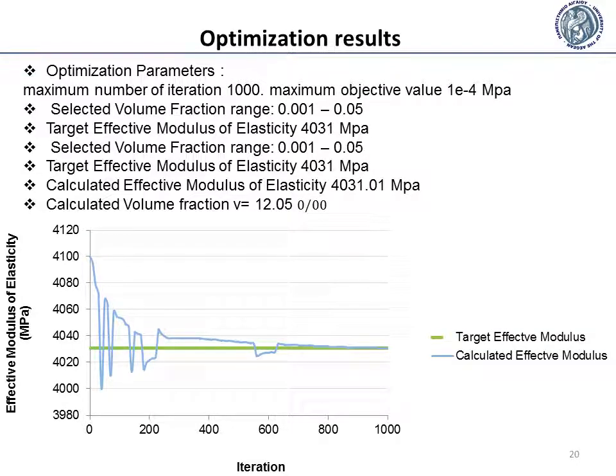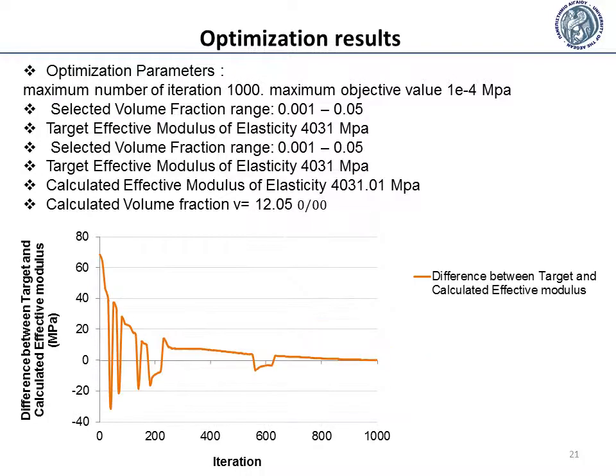This diagram shows the calculated modulus versus iteration. The parameters for this case are 1000 maximum iterations and 1×10⁻⁴ maximum objective value. The final calculated volume fraction is 20 per mil and the calculated effective modulus is 4031.01 MPa. This diagram shows the difference between the calculated effective modulus and the target effective modulus versus iteration.